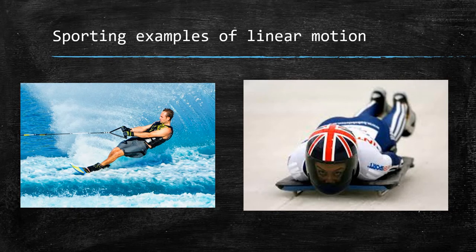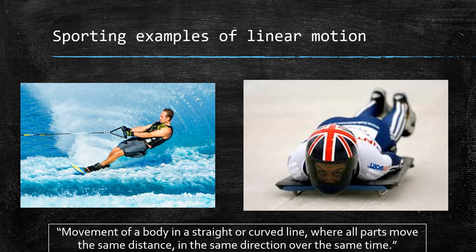Sporting examples of linear motion: here we have a wakeboarder who is probably not moving in a completely straight line but in a curved line. However, because all parts of his body are moving the same distance in the same time, it is linear motion. We also have a skeleton performer — again, all moving at the same time, same distance. So movement of a body in a straight or curved line where all parts move the same distance in the same direction over the same time.